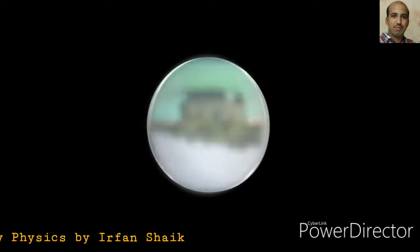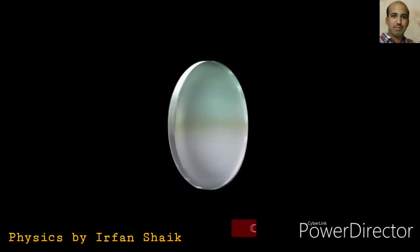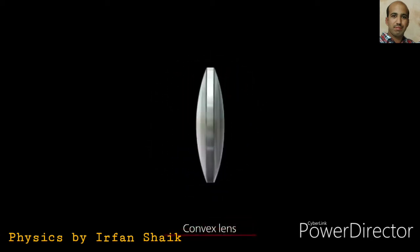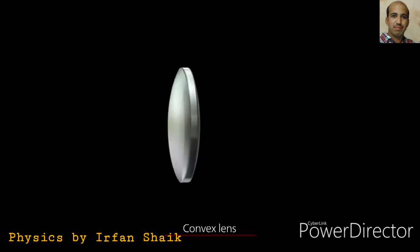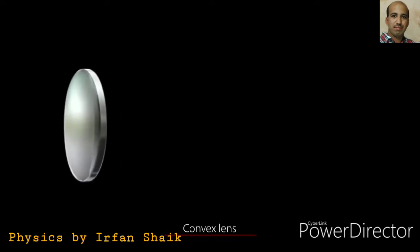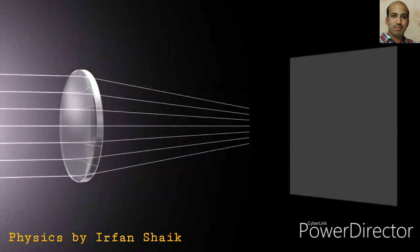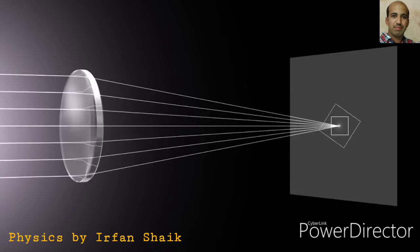A lens which is thicker at the middle is called a convex lens. When a beam of parallel light rays passes through a convex lens, they will converge at a point. That is called the focal point.